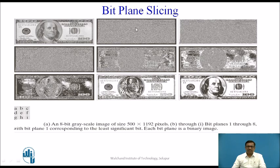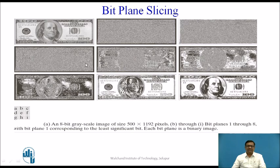As we increase the bit position — bit 0, bit 1, bit 2, bit 3, bit 4, bit 5 — we get something more equivalent to the input image. This way we can represent the input image using different bit planes. We can even combine planes; for example, if we combine bits 2 and 3 together we will get a more appealing image, because combining these two planes gives more information. This is what bit plane slicing is.